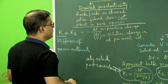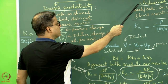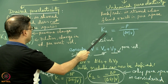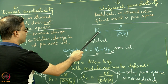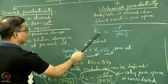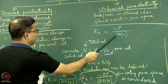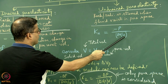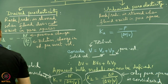A similar definition can be made for the undrained poroelasticity: K_U, the stiffness of the material, is equal to minus delta P divided by delta V divided by V.